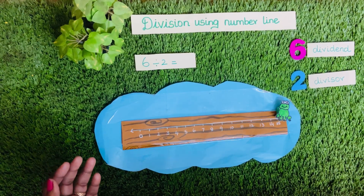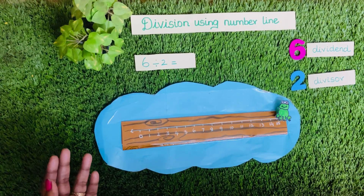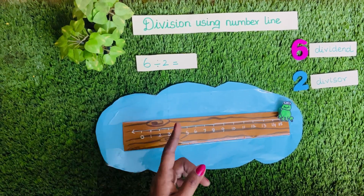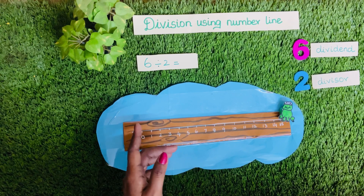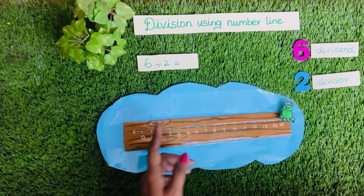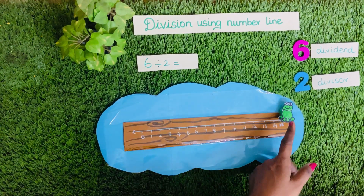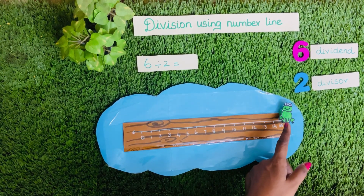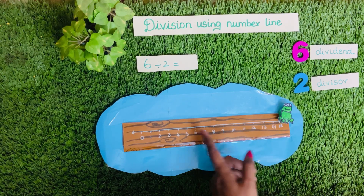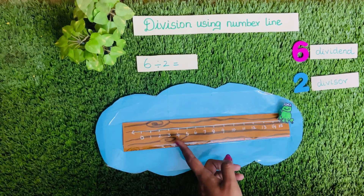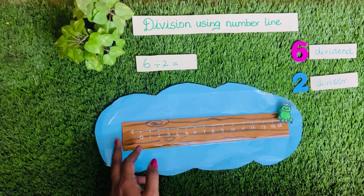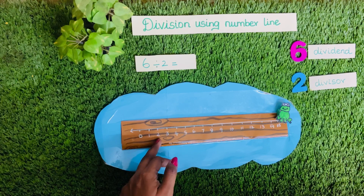Welcome to Math Talk. Let us learn division on a number line. The frog is on the wooden log. Can you see the number line on the wooden log? We shall use it to divide the numbers.